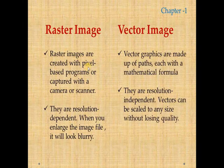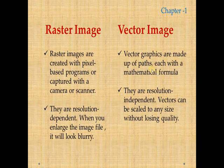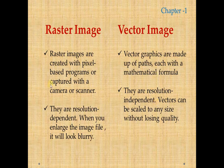Raster images are created with pixels. Vector images are made up of paths, each with a mathematical formula. So raster is based on pixels or dots; vector is based on paths formulated by a mathematical formula. When you enlarge a raster picture it will look blurry because it is resolution dependent. Vector images are resolution independent.